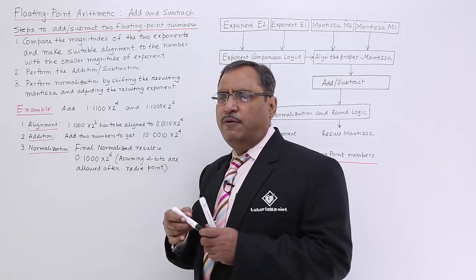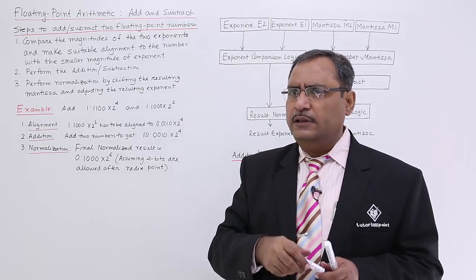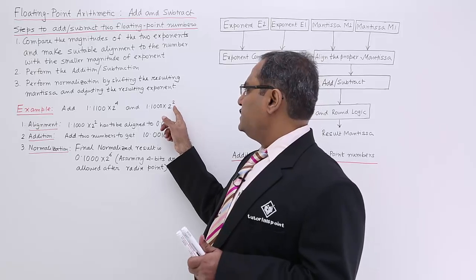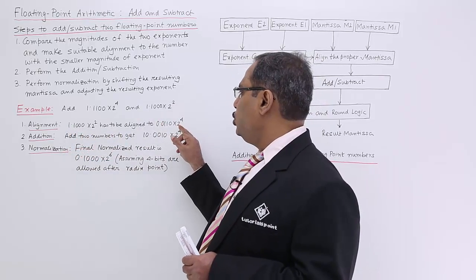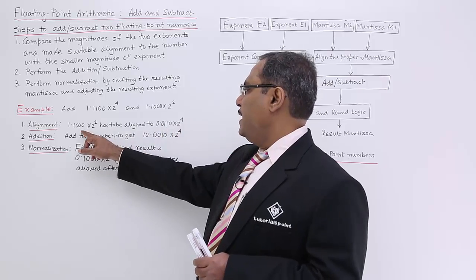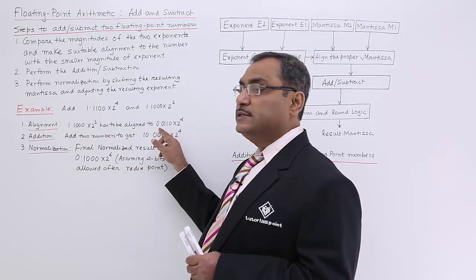I shall go for the realignment. I am considering 4 bits after the radix point. Now this number has to be realigned. If I want to make it 2 to the power of 4, then I shall have to make this one in this way. I think it is clear to us.